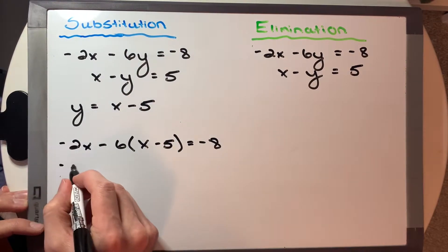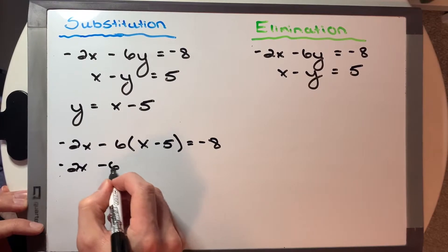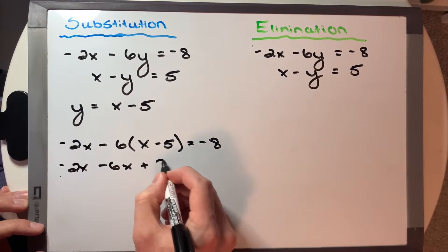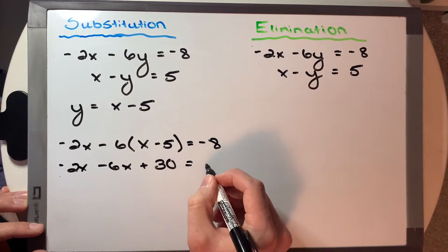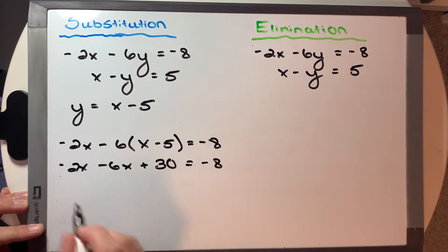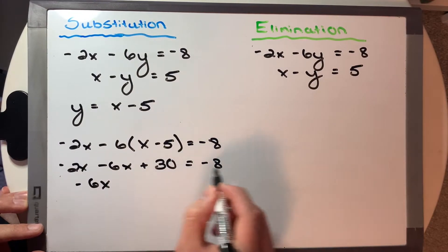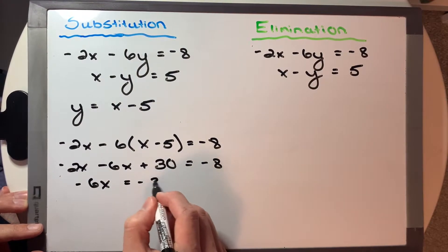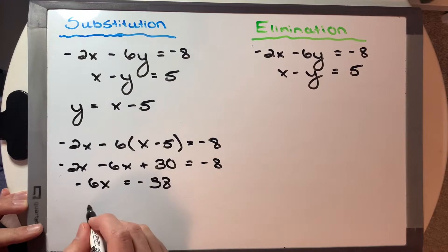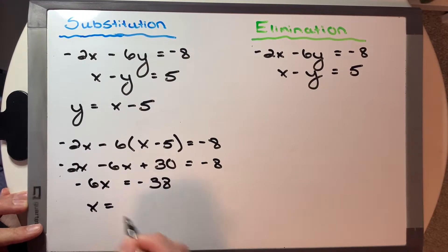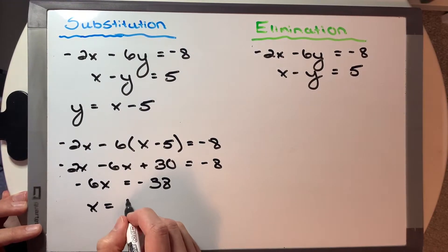Now we'll expand it, so we'll have negative 2x minus 6x plus 30 is equal to negative 8. Now let's combine our x values to negative 8x, and then move the 30 over to the other side, which would be negative 38, and then we'll get an x value that is equal to 19 over 4.